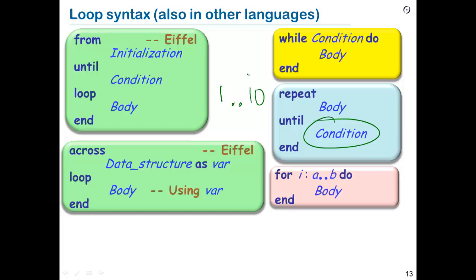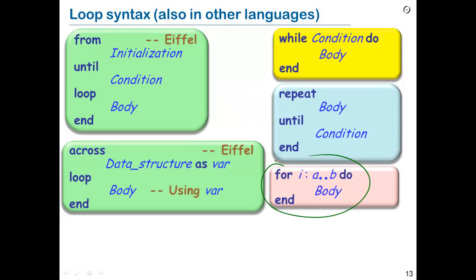For example, for i from a to b, do body — this means the body is executed for i equals a, then a+1, then a+2, and so on until b. Of course it could be empty if a is greater than b. Usually a and b are integers, although this could also work for characters if there is a well-known order. It's a good exercise to express a for loop in terms of either a from-until loop or a while loop — a little quiz to make sure you're completely comfortable with the notion of loop and the various syntaxes.